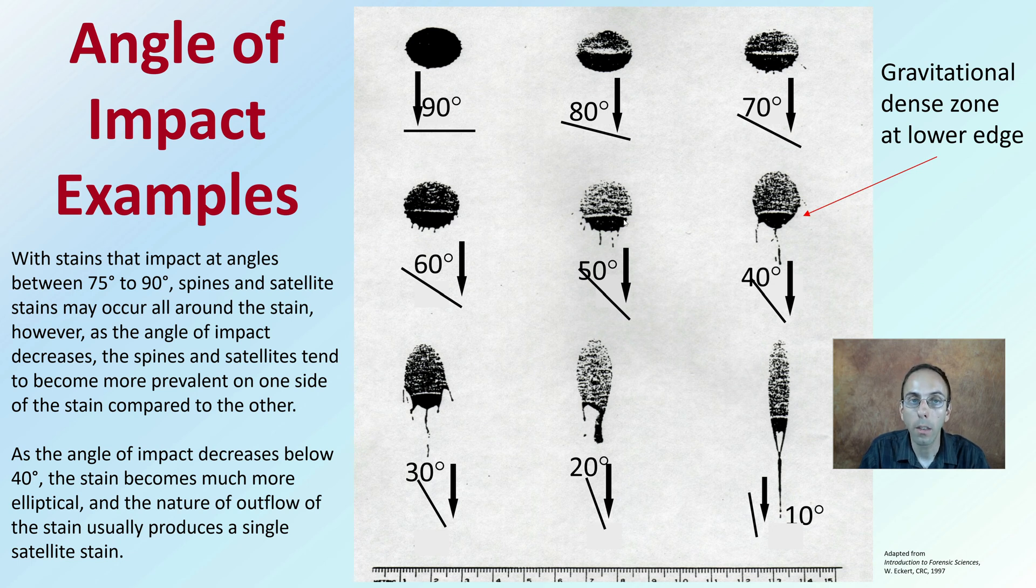What we're seeing here in this black and white image is it tends to be darker on the lower side. That's the gravitational dense zone at the lower edge. That blood's forming and collecting a little bit more at that bottom area there. As the angle of impact decreases below 40 degrees, the stain becomes much more elliptical, and the nature of outflow usually produces a single satellite stain.